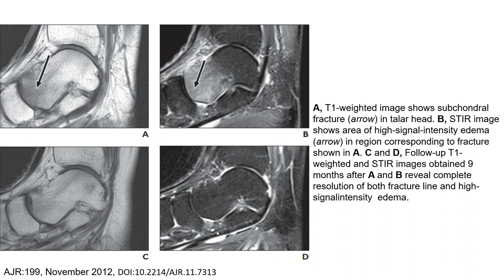This is an example of talar head fractures on MRI. Image A is a T1-weighted image showing a subchondral fracture indicated by the arrow. Image B is a STIR image showing high signal intensity of bone marrow edema, as indicated by the arrow, in the region corresponding to the fracture shown in A.